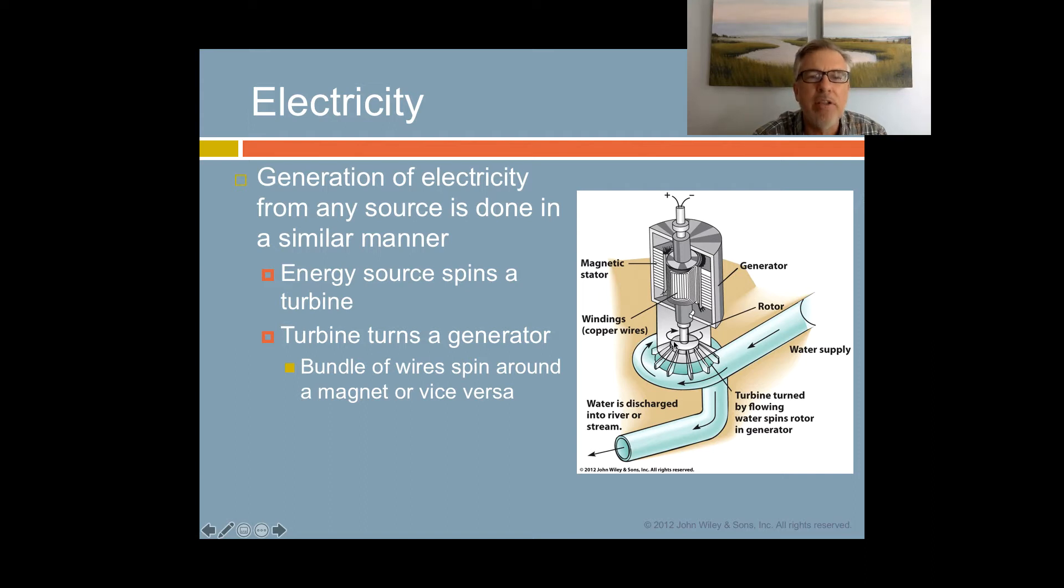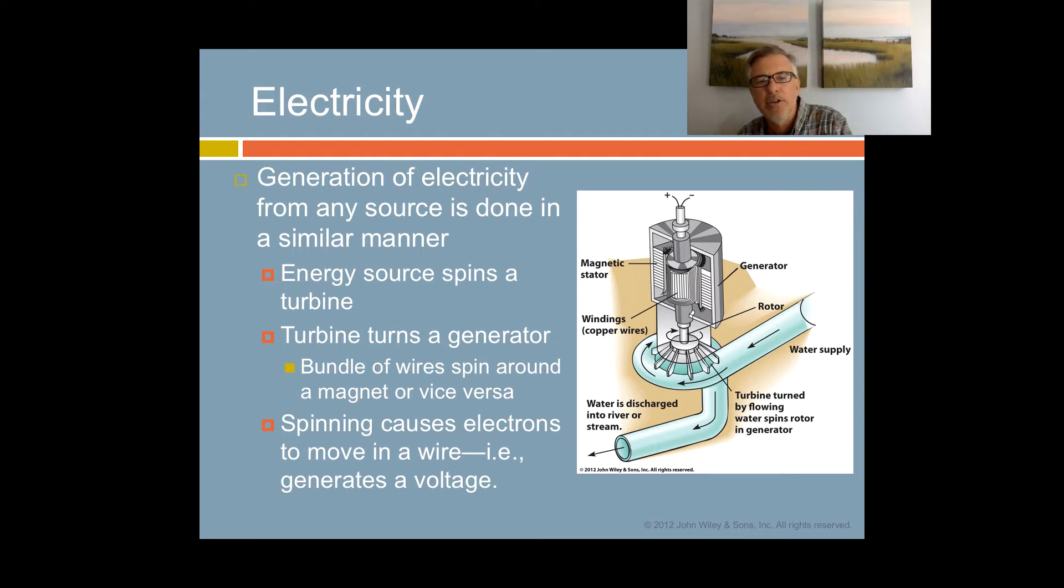Inside the generator is that bundle of wires and that magnet. You can either spin the wires within the magnet or the magnets around the wires. It doesn't really matter, what matters is the relative motion. And you generate a voltage in the wire, you generate high energy electrons. Now that they have the energy, they will flow downhill to areas of lower voltage. In that flow, in that current, you can extract the energy from the electrons and use them to do things such as beat your eggs or run your computer.